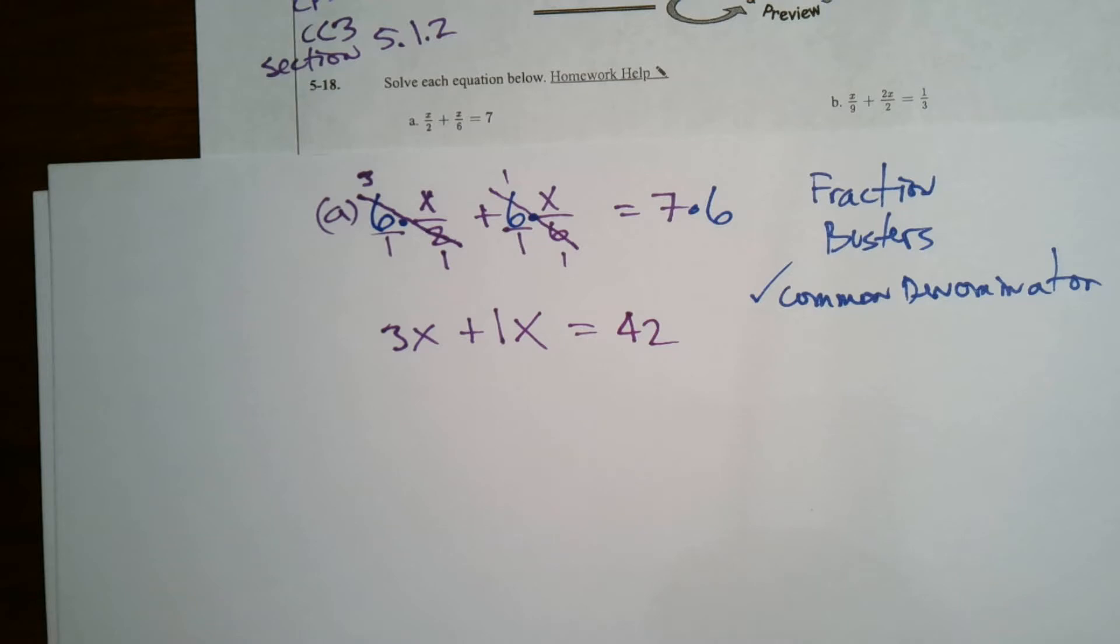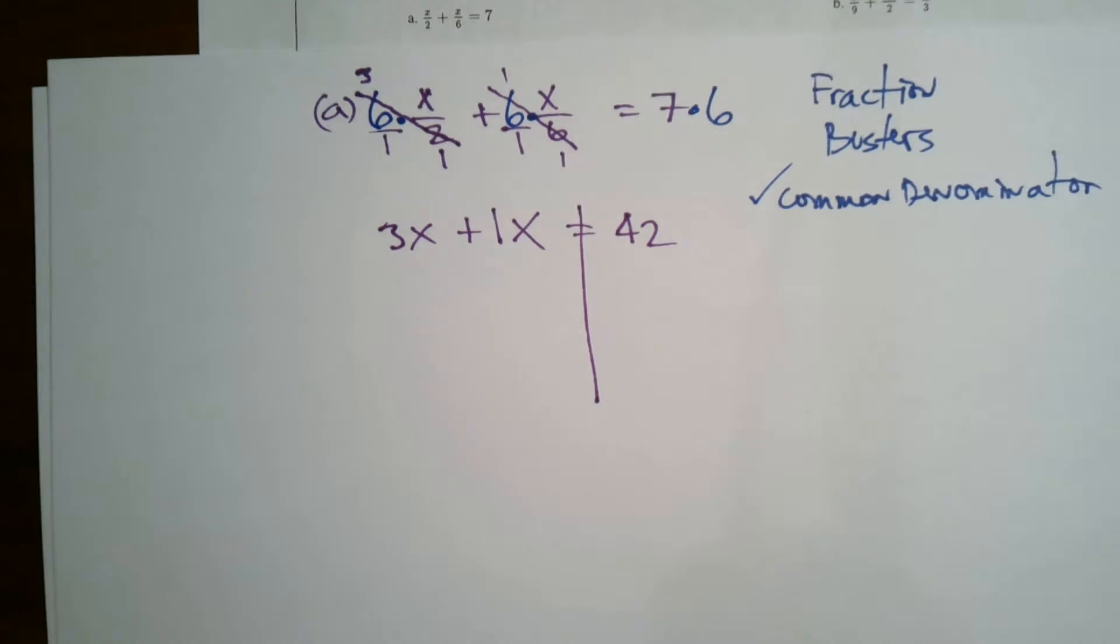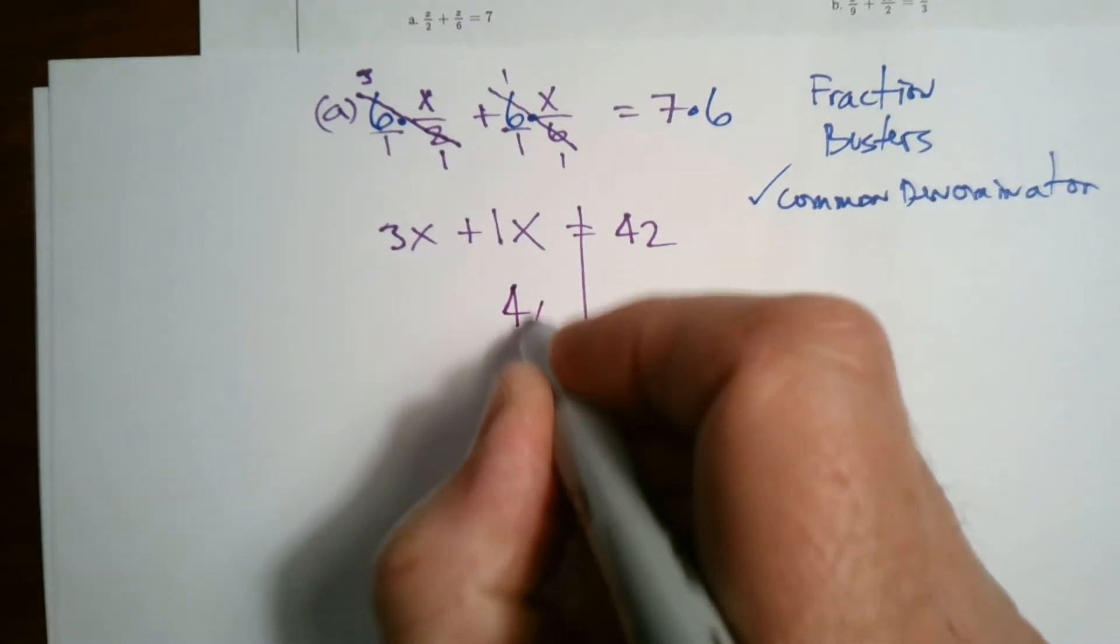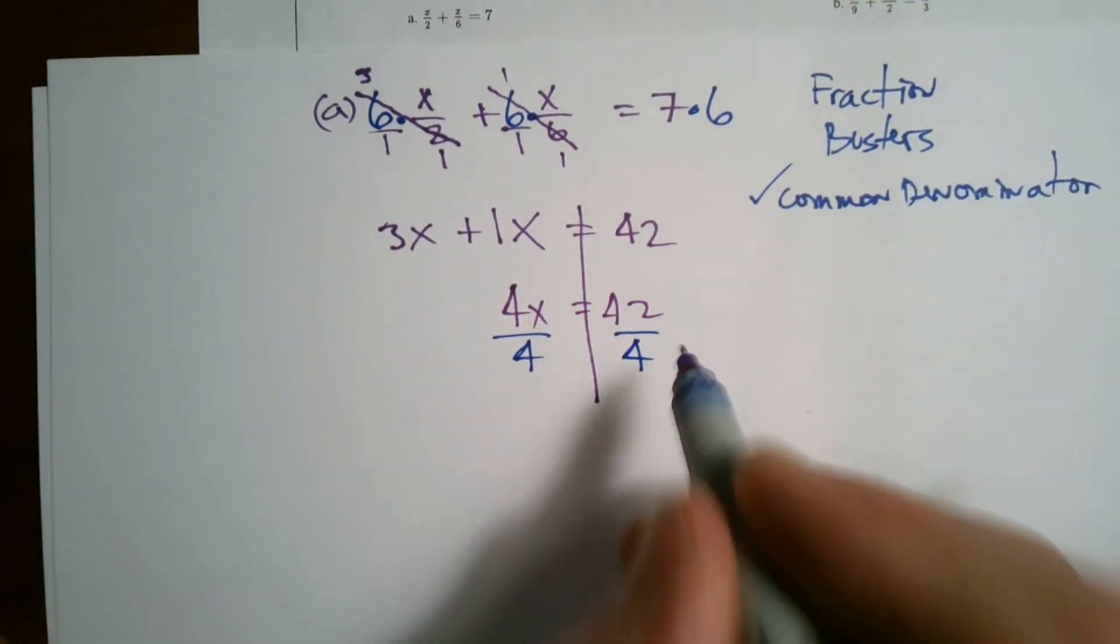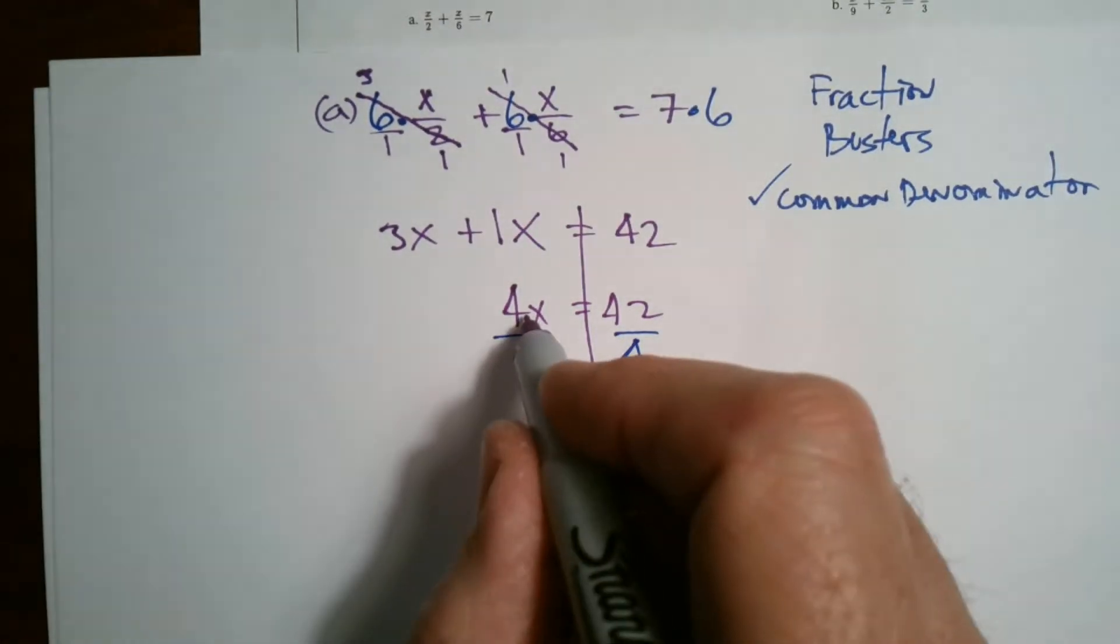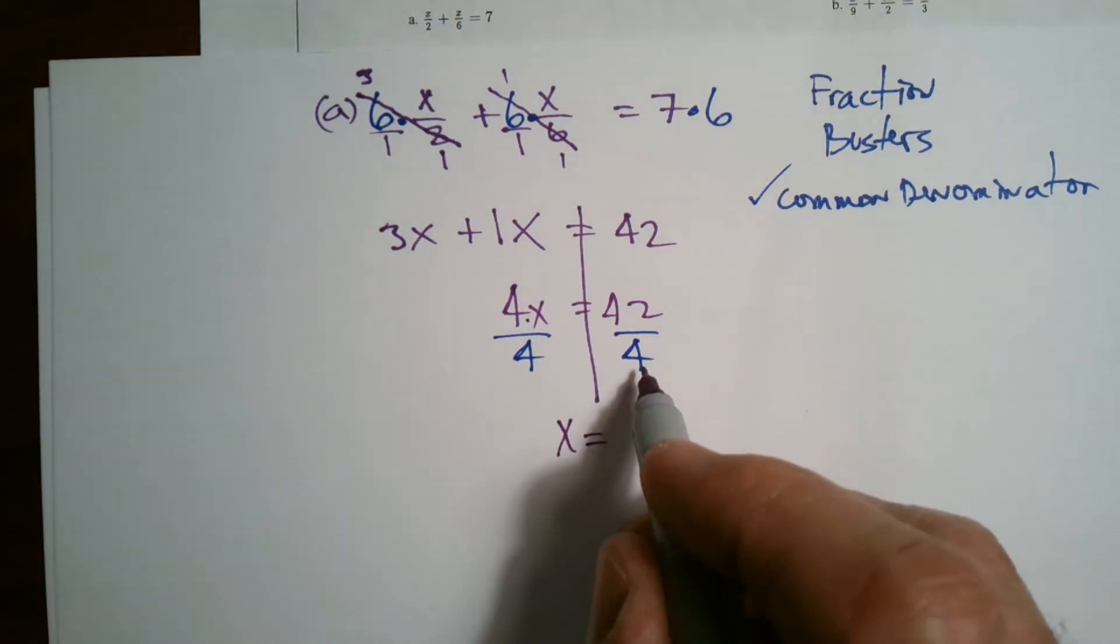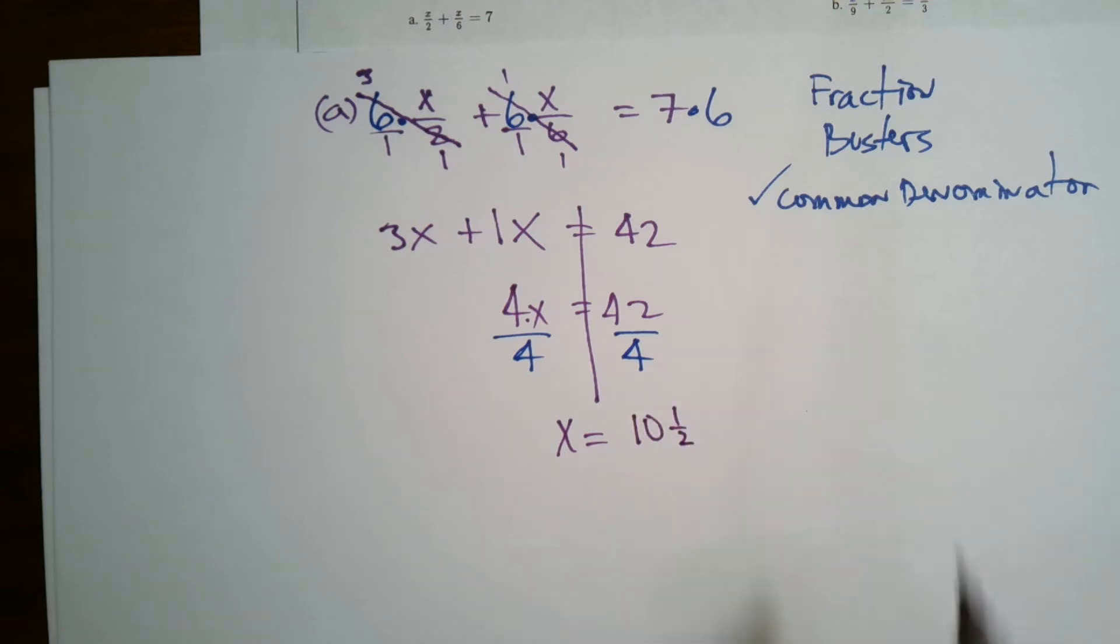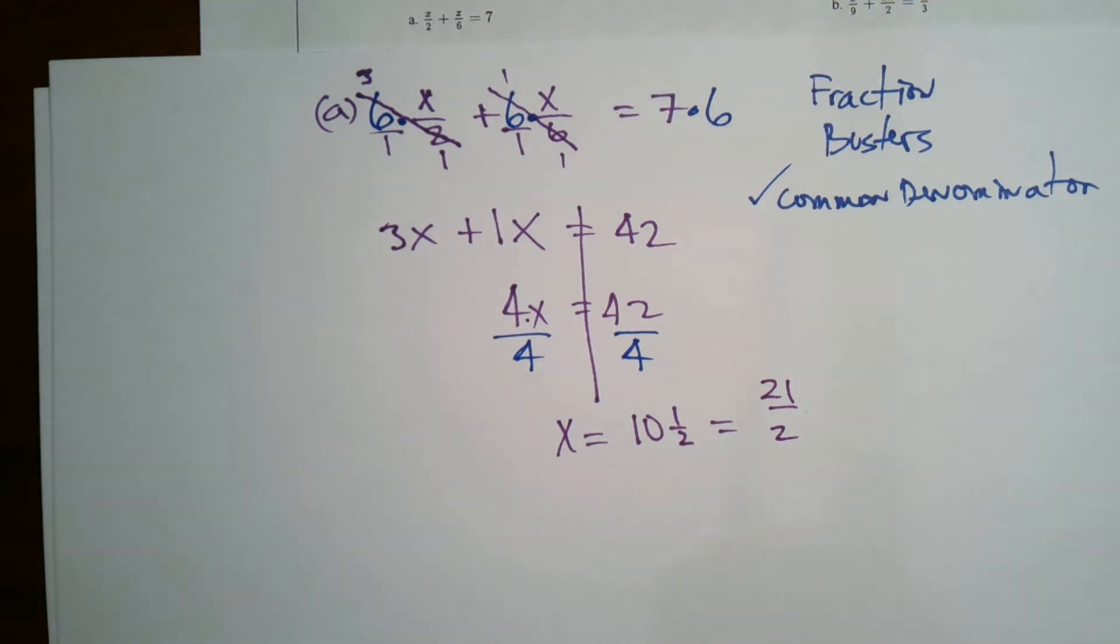Now I've got a nice equation. I no longer have fractions. So I can just combine my like terms here. So I get 4x is equal to 42. And then divide by 4 to do the opposite operation, the inverse operation here. If that's multiplication, I use division to eliminate that 4. So x is equal to, well, 4 goes into 42, looks like 10 and a half, 10.5. Or you could have reduced this or simplified this to be 21 over 2 either way. Okay, there's A.